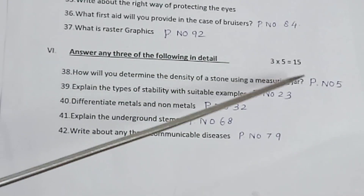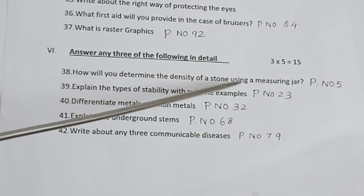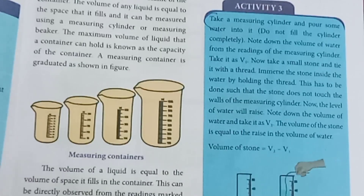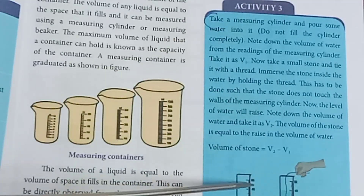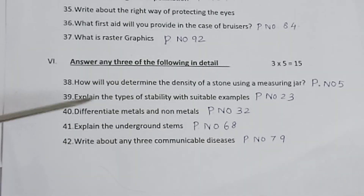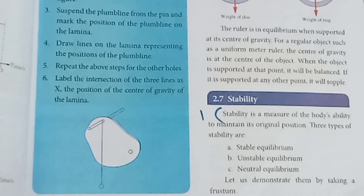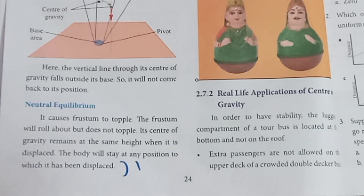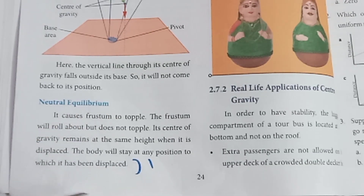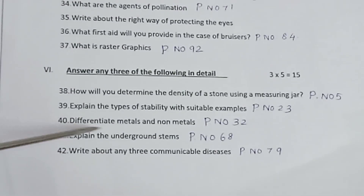Section 6: Answer any three of the following in detail. 3 into 5 is equal to 15. Refer to page number 23-24 for stability. Topics include neutral equilibrium — when an object is displaced it returns to equilibrium.